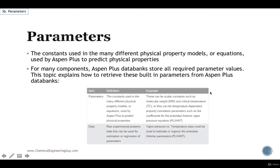Let's define a parameter. What's a parameter according to Aspen Plus? It is any constant used in the many different physical property models or equations used by Aspen Plus in order to predict physical properties. Important points are the models or equations that require constants in order to calculate physical properties.